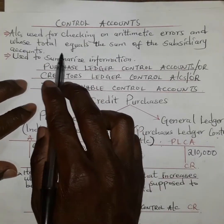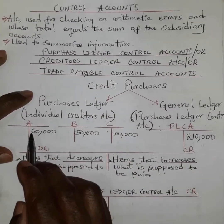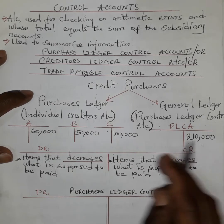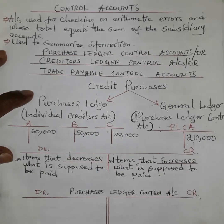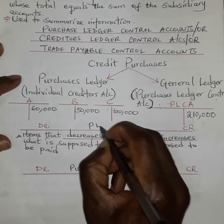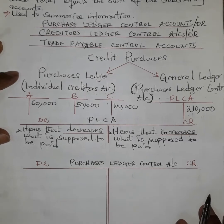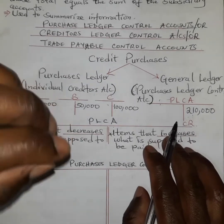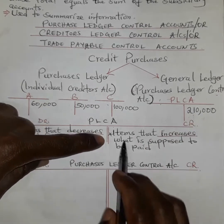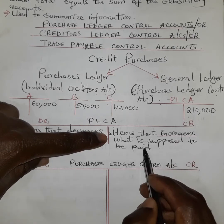Credit entries in the purchases ledger or individual creditors' accounts are credited in the purchases ledger control account, while debit entries in the individual accounts are also debited in the purchases ledger control account. The same entry applies to all, and it is used to check arithmetic accuracy. If the control account shows 210,000 but we entered 150,000 or 200,000, it means an error was made in one of the accounts.